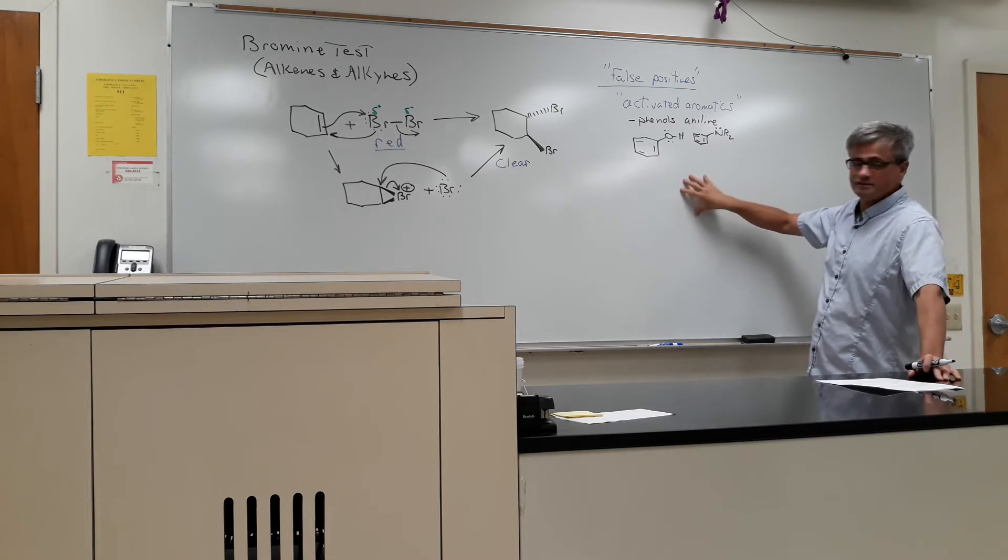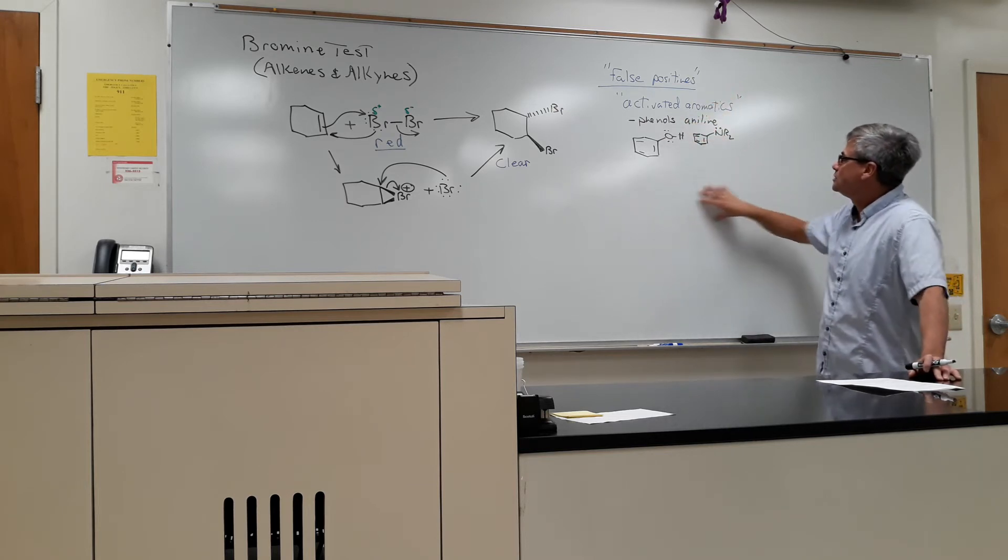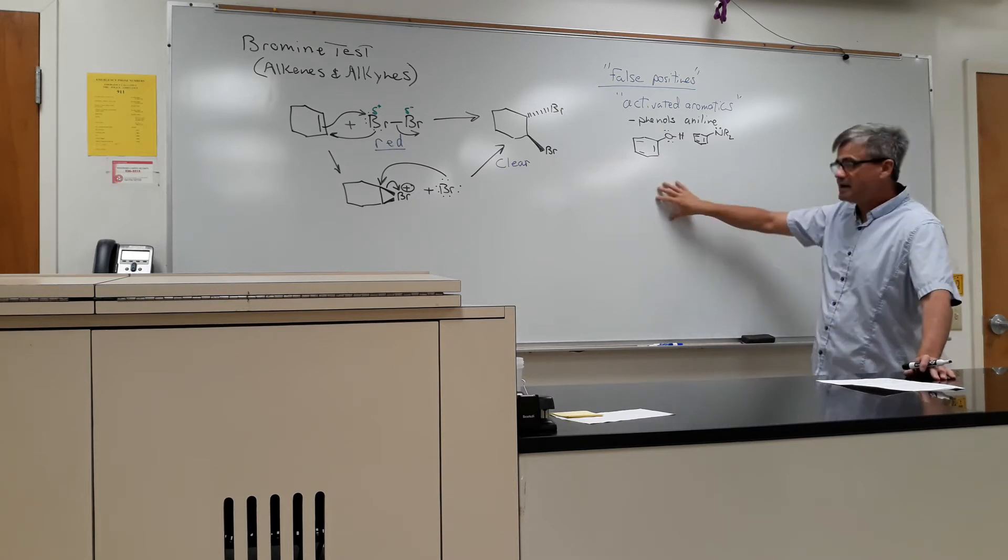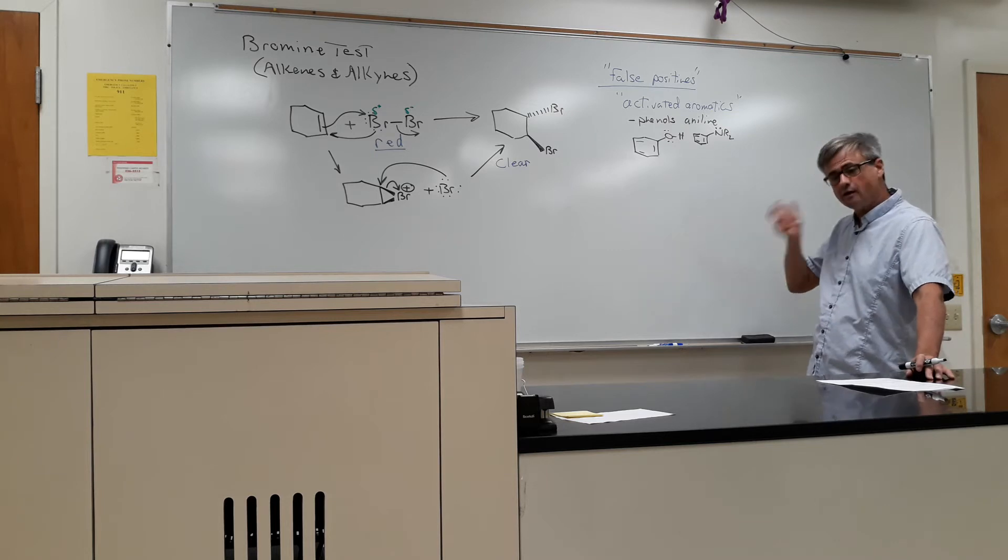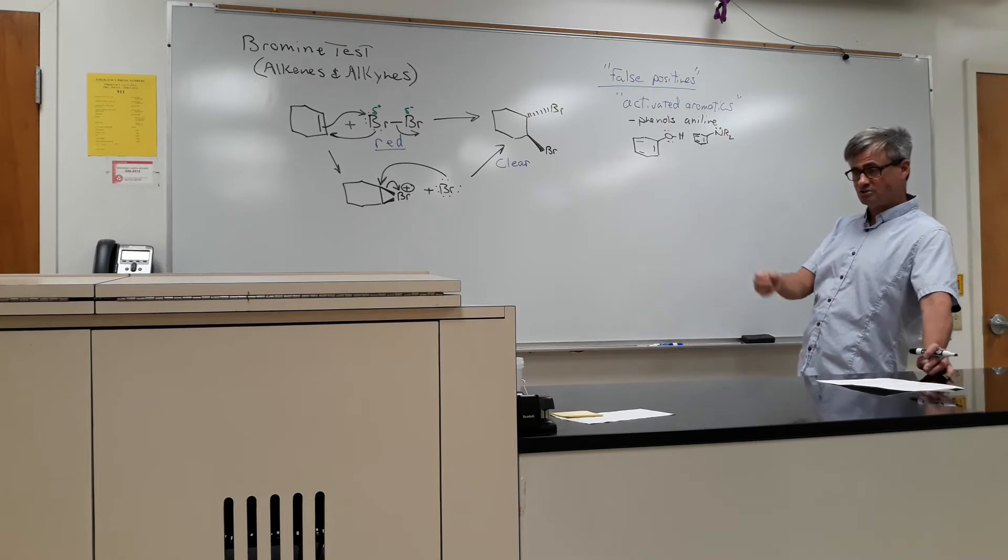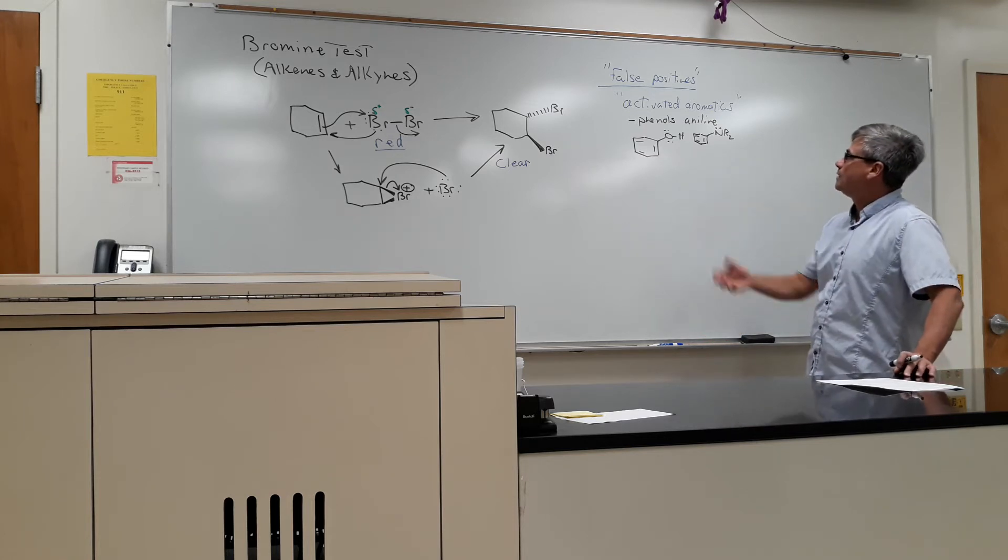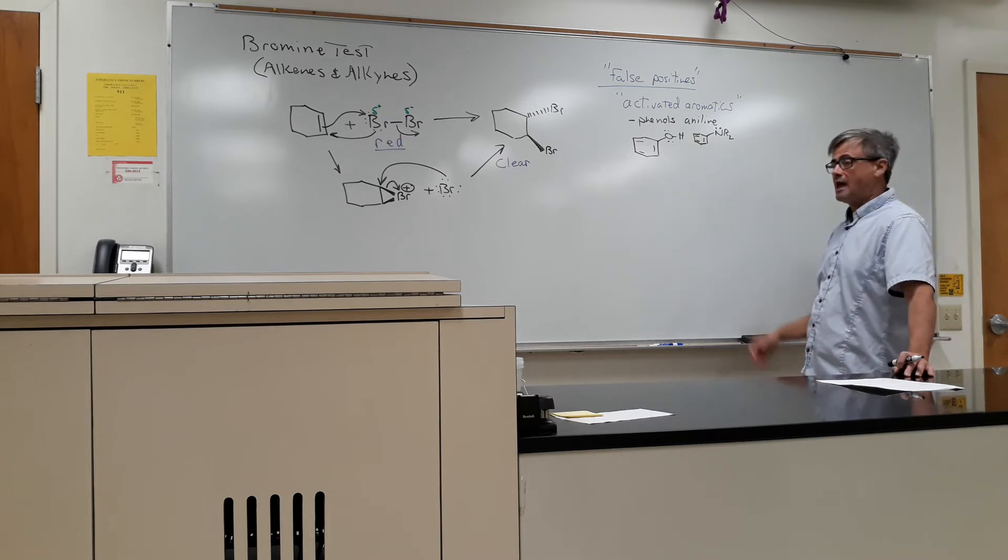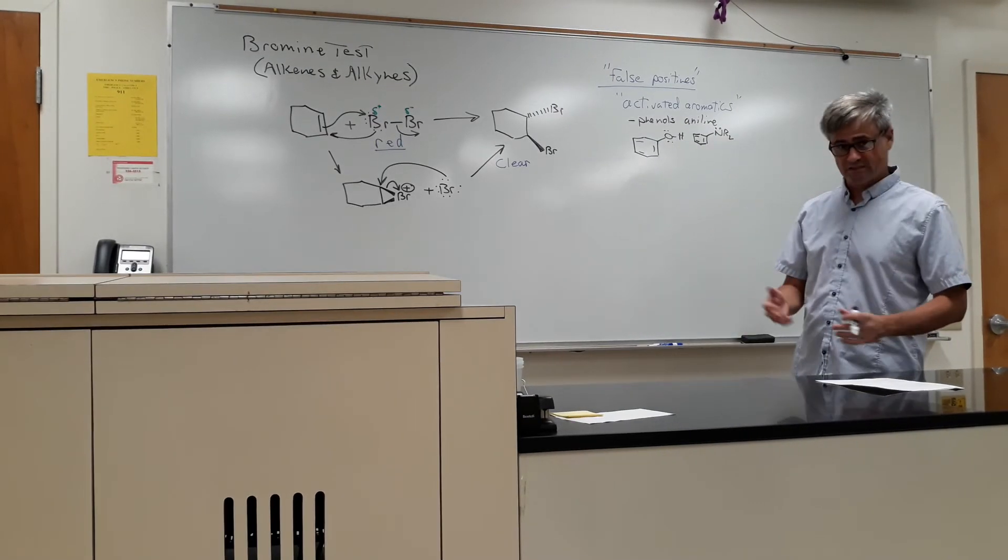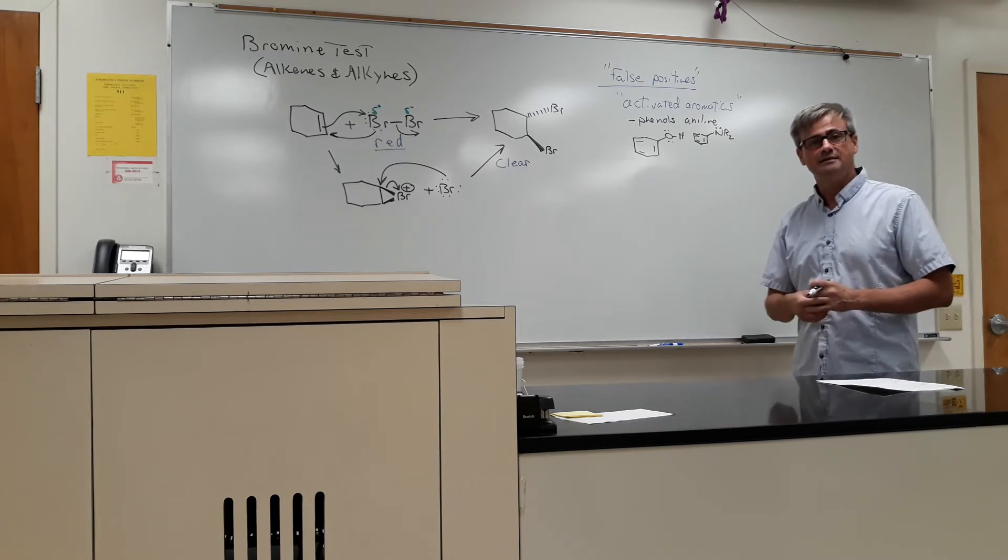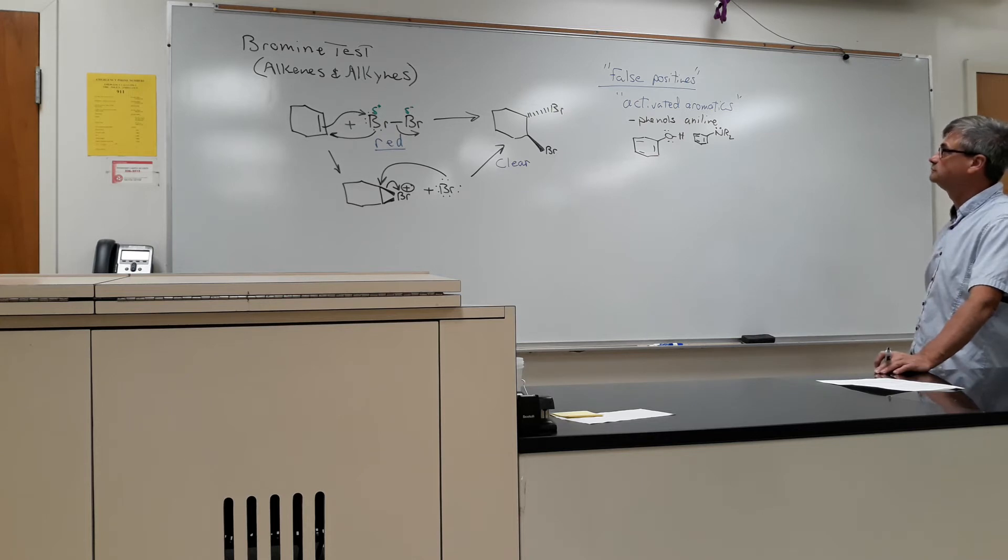What does activated mean? Activated means that you have some group that's electron-donating. An electron-donating group is usually a group that has a lone pair on the connecting atom. So they are things, ortho-para directors. Well, I shouldn't say all ortho-para directors, because there are some ortho-para directors that aren't quite electron-donating enough to call activated aromatics. But a couple examples are phenols could do this, and anilines. What's an aniline? An aniline is an amine where the nitrogen is attached directly to the benzene ring. And then, of course, a phenol.